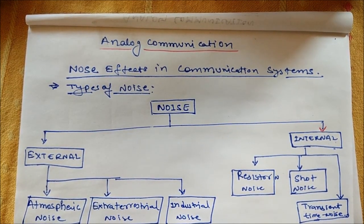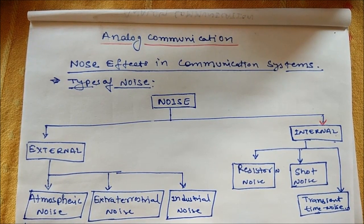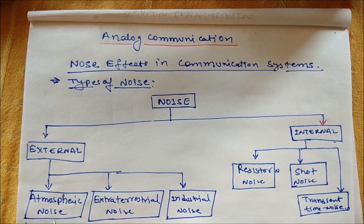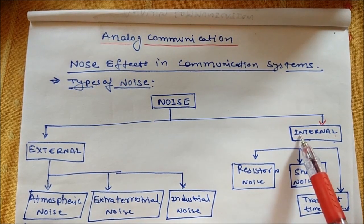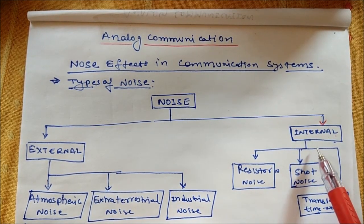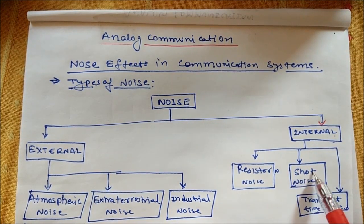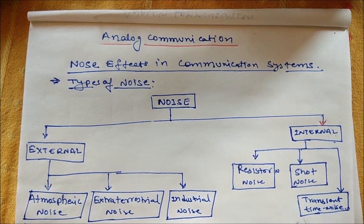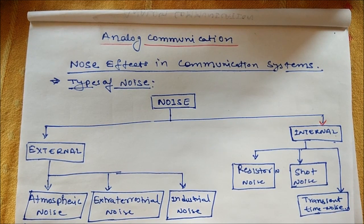Let's quickly look into its types. External noise is further divided, majorly into three types: the first is atmospheric noise, the second is extraterrestrial noise, and the third is industrial noise. Internal noise is also divided majorly into three parts: resistor noise, shot noise, and transit time noise. So let's see each one by one.